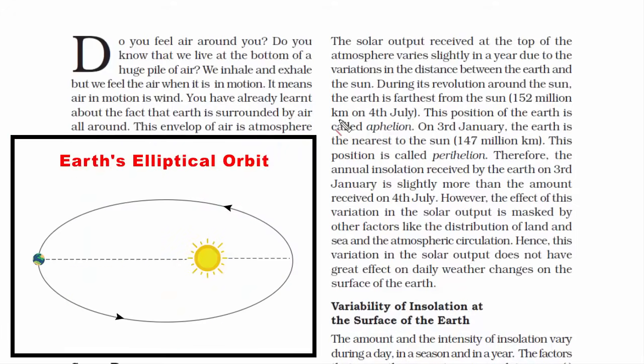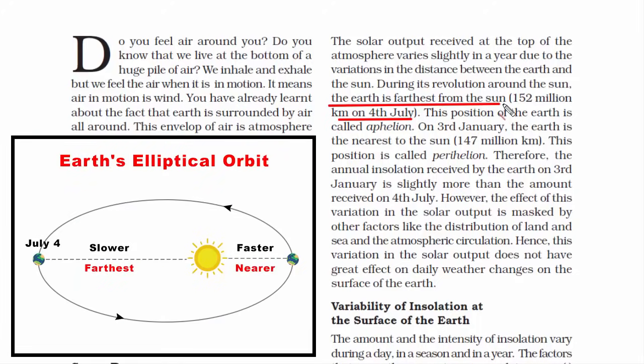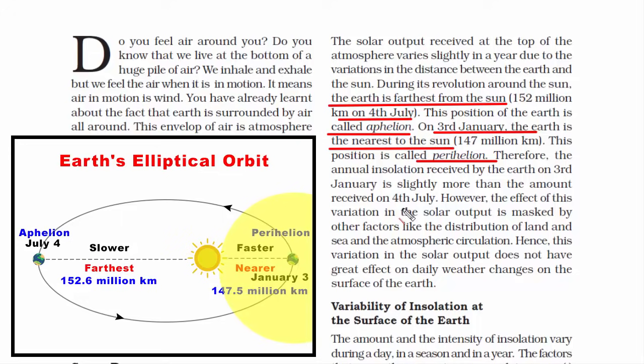The speed of the Earth in its elliptical orbit is maximum when it is closest to the sun, and when it is far, the speed is minimum. Here you can see that during 4th July, the Earth is farthest from the sun. This position is called aphelion, wherein we are 152.6 million kilometers away from the sun. On the other hand, on 3rd January, the Earth is nearest to the sun, called perihelion, wherein we are 147.5 million kilometers away. Hence, the annual insulation is more on 3rd January and less on 4th July. Please remember these dates.